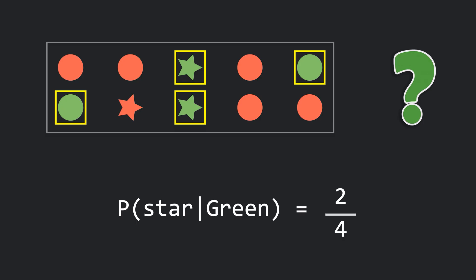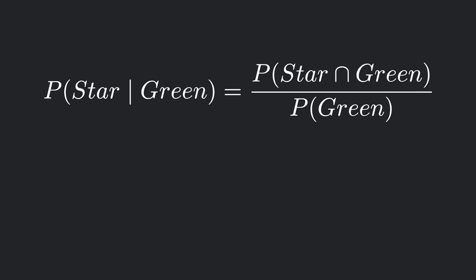And that in essence is Bayes theorem, a method to calculate the probability of an event when some related evidence is already known. Now let's derive the proper formula for Bayes theorem mathematically, keeping our star example in mind. The probability that the shape is a star given it's green is given by the probability that it is a star and green, divided by the probability that it is green. This is the logic we have just seen.